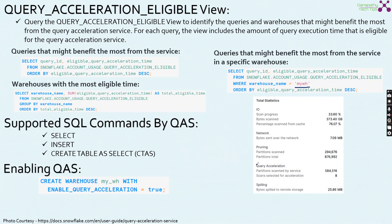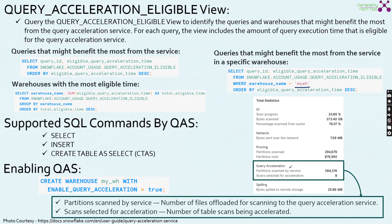In the statistics part of the query profiler, there is an interesting feature for query acceleration. Beyond pruning, you can see two parameters: 'Partitions Scanned by Service' — the number of files offloaded for scanning to query acceleration — and 'Scans Selected for Acceleration' — the number of table scans being accelerated. By viewing the query profiler, we can understand how much query acceleration happened for a specific query.